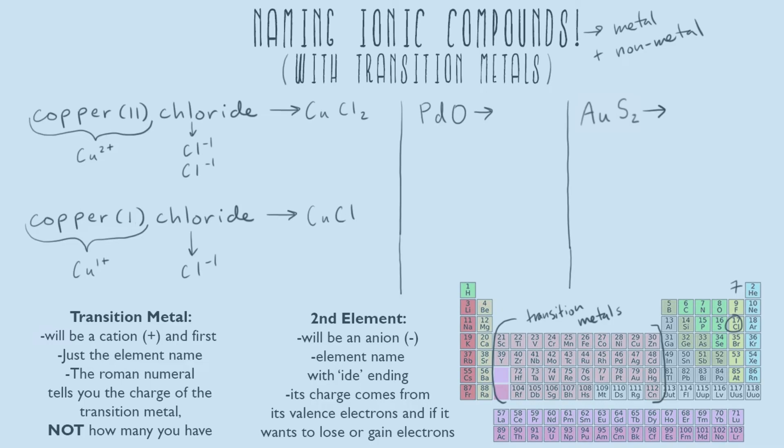Now let's go from chemical formula to name. Also notice that we only ever see the Roman numeral when the name is written out. Never put the Roman numeral in the chemical formula, because when you have a formula like PdO, we can actually figure out what the charge is going to be from the other element.